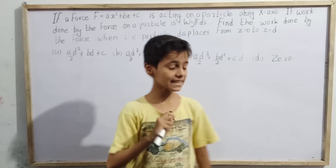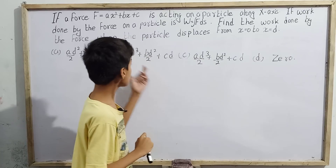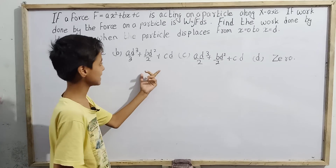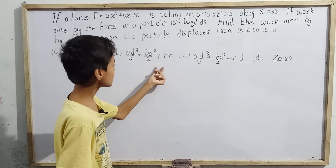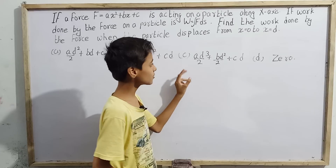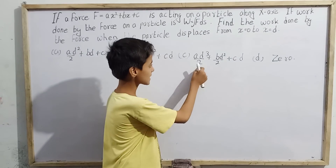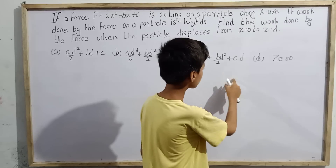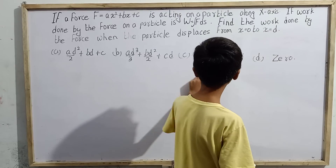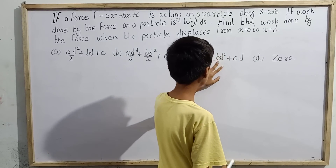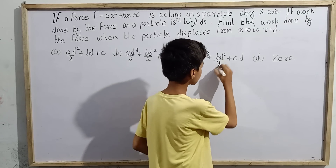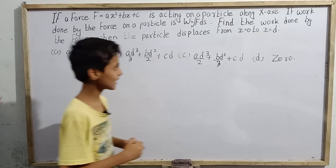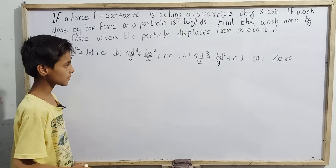The four options are: A is ad²/2 plus bd plus c; B is ad³/3 plus bd²/2 plus cd; C is ad³/2 plus bd²/2 plus cd; and D is 0.